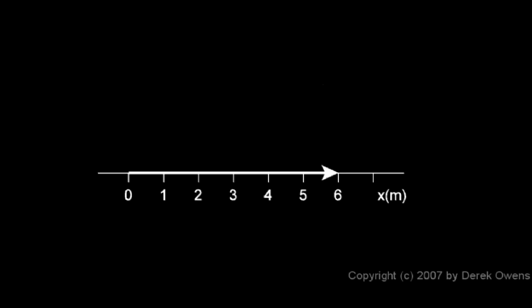Now here's a simple example. Suppose an object starts at x equals 0 meters and it moves at a steady speed to x equals 6 meters, and it does this over the course of 3 seconds. Our goal is to graph the motion of this object.